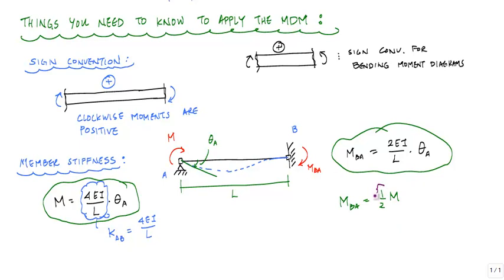This one half represents the carryover factor. And it's important to point out here that this works for when you have a joint and the far end is fixed.